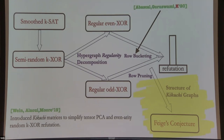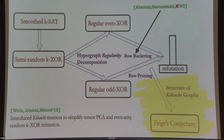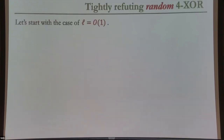The key idea of using Kikuchi matrices comes from the Wein–Alawi–Moore paper on tensor PCA. I'll focus on the case of random 4XOR — 4 being the smallest non-trivial even number, since 2 is very easy. I'll start by telling you a very classical idea: how spectral refutations work. If you've seen this before you'll be slightly bored for maybe five minutes, but I'll move on quickly.